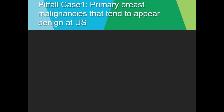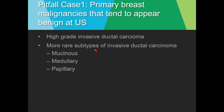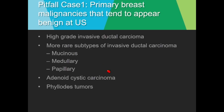A few other primary breast malignancies can appear benign at ultrasound. Beyond high-grade invasive ductal carcinomas, there are rarer subtypes including mucinous, medullary, and papillary — and I'll show examples of mucinous and papillary carcinomas. Also very rare adenoid cystic carcinoma, more often seen in salivary glands. And phylloides tumors, which are most often benign but can behave aggressively, be malignant, and metastasize.